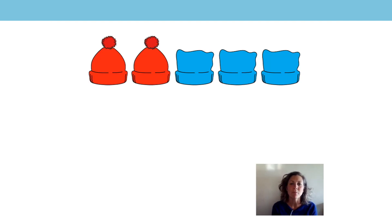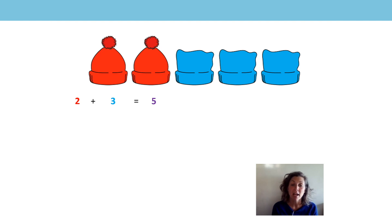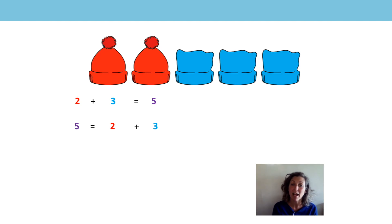What can you see in this picture? Pause the video and tell an adult, or you can tell me. I can see two red hats and three blue hats. What would the addition equation be to go with this image? Did you say it would be two plus three is equal to five? What does the two represent? Yes, the two represents the two red hats. And what does the three represent? The three blue hats. And what does the five represent? Yes, the five is how many there are all together. Could we also start with the five? Could we start with the sum? Yes, we could say five is equal to two plus three. The sum is five, two is an addend and three is an addend.